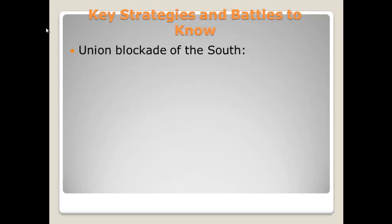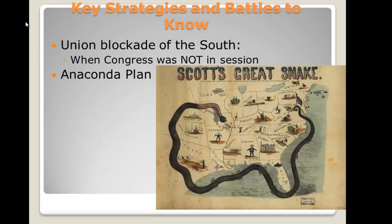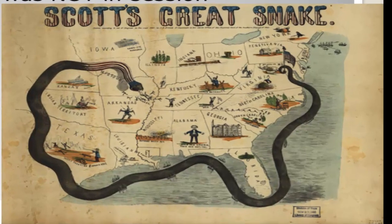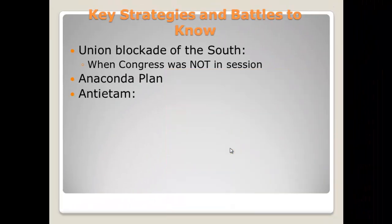Some strategies and battles you should be familiar with: the Union blockade of the South was a major action in the beginning, though it happened when Congress was not in session, so some argued that Lincoln abused his power. Later we have the Anaconda Plan, developed by General Winfield Scott. It's the idea of a blockade shaped like a snake — blockading the Atlantic Ocean and the Gulf of Mexico, then cutting down the Mississippi River, which would essentially cut the South in two, as a way to economically hurt the South.